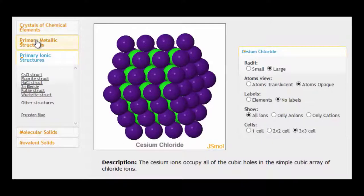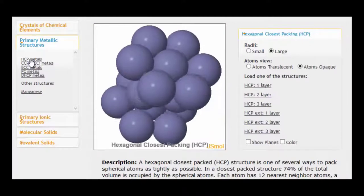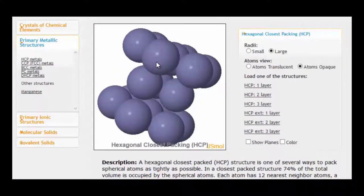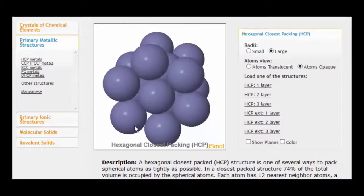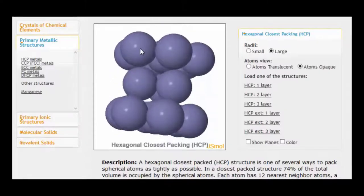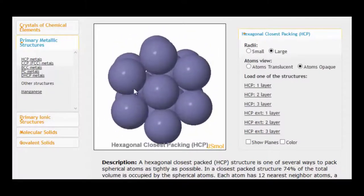If we now look at a metallic lattice, this structure here is called hexagonal close-packed, and there are quite a few metals that take this particular lattice. If I twist it around this way, you can see that within each layer, this shows three layers here, within each layer you can see that the atoms arrange themselves into a sort of hexagonal pattern. So that's where the name comes from.